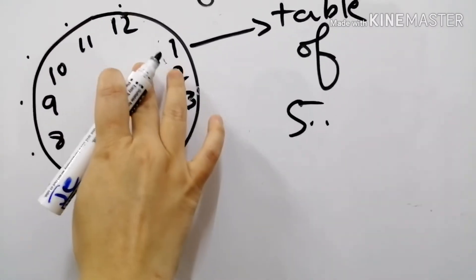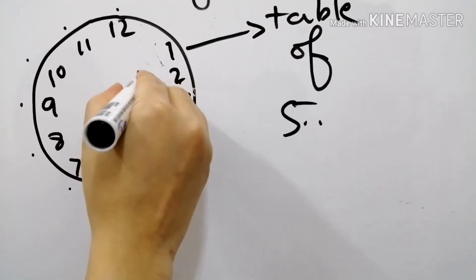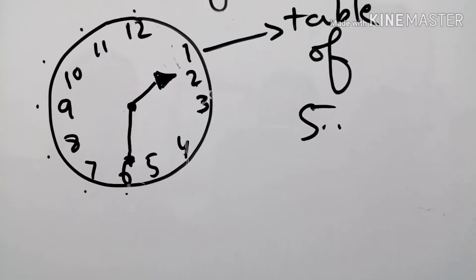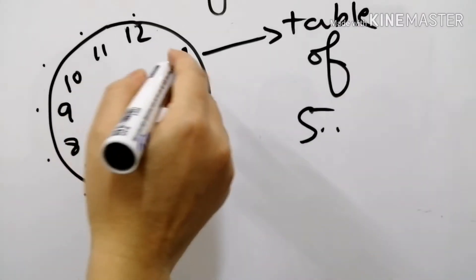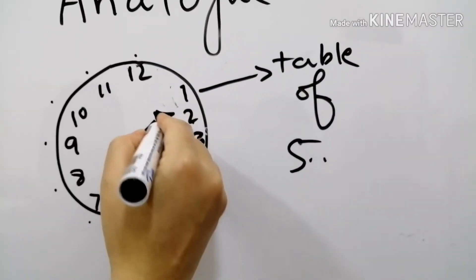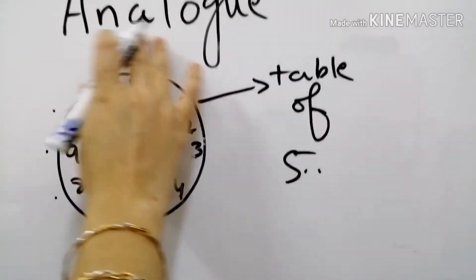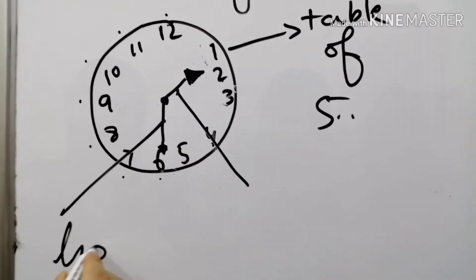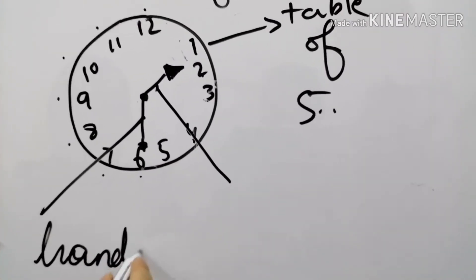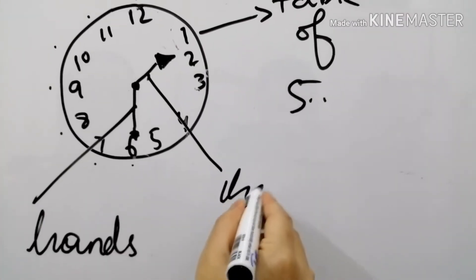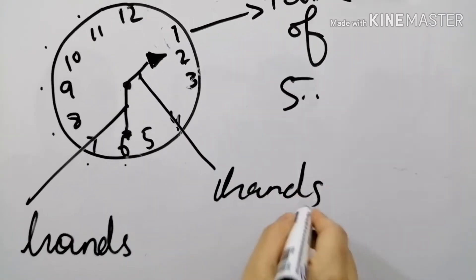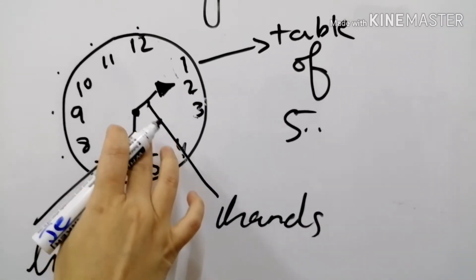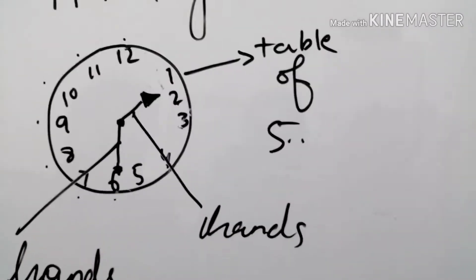So whenever you are going to see the time you have to read the table of 5. Did you get me? So this clock that shows the time with the hands is called analog clock. These are the hands. These needles are the hands.